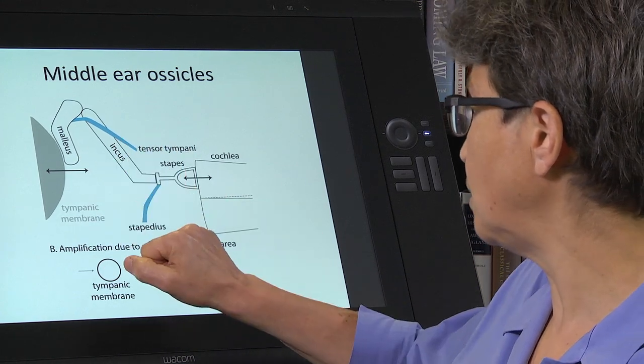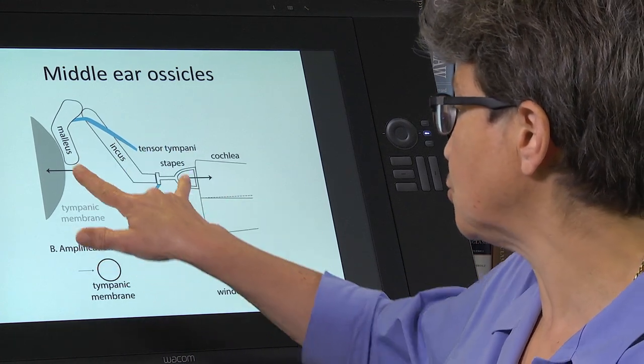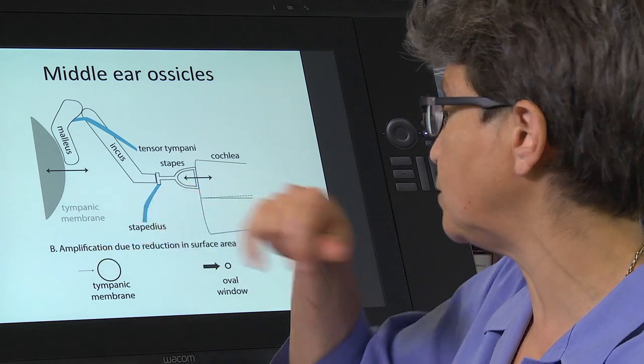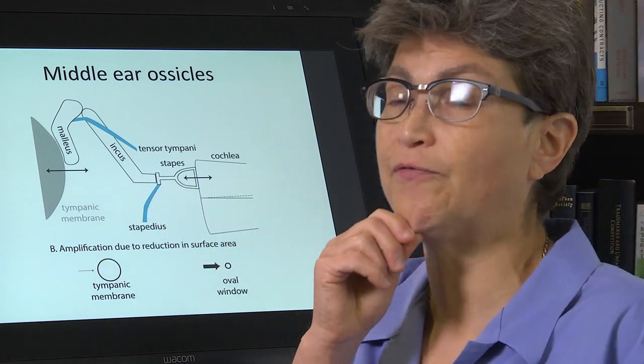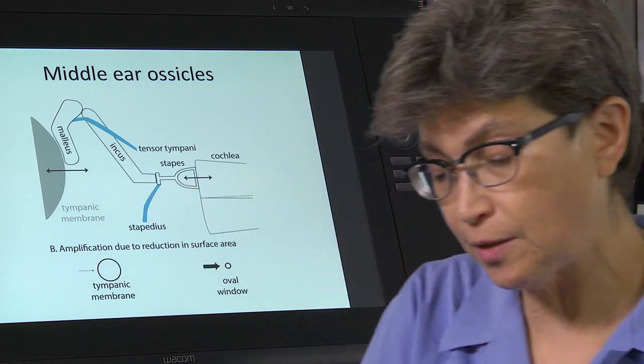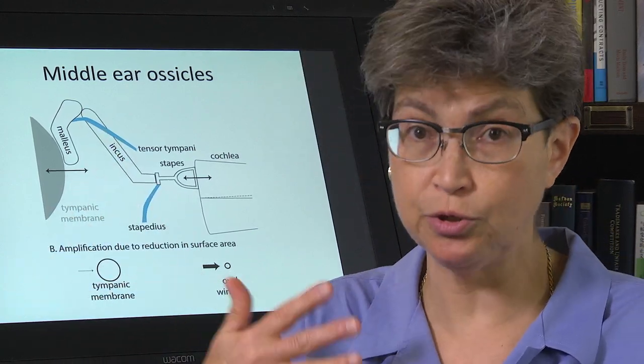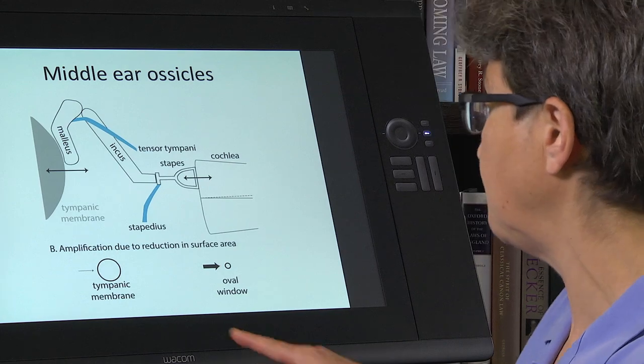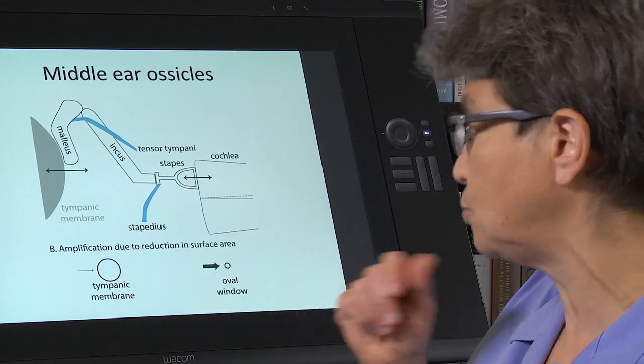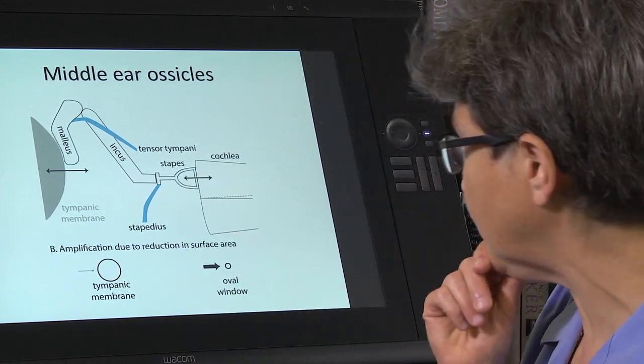And there's another feature of the ossicles that we won't go into, which brings it to about a factor of 15. So you're going to lose 15 times less than what you would lose otherwise because of these two features of the middle ear.